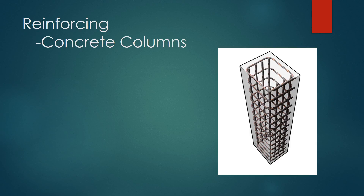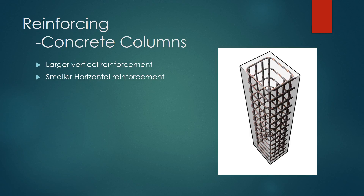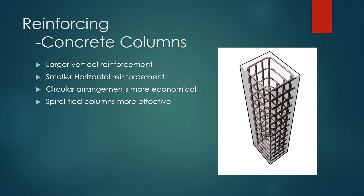Reinforcing in concrete columns is also important. Larger reinforcement in concrete columns is usually placed vertically. Smaller reinforcement is placed horizontally to prevent outward buckling, while the inner core of concrete prevents inward buckling. Circular arrangements for concrete columns are usually more economical — spiral tied columns are more effective against extreme and dynamic loads. Often, concrete columns are assembled on the ground and moved into place for more efficiency.